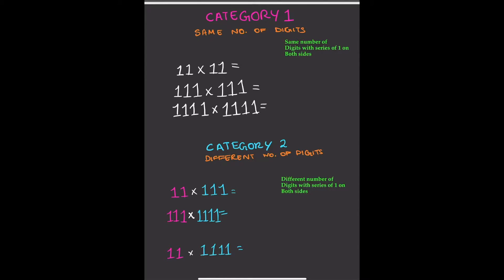With 11 times 11, there are two digits on both numbers. Because there are two digits, we start from 1 and increase to 2 — so that's 1, 2 — then we decrease back to 1 again, giving us 1, 2, 1.